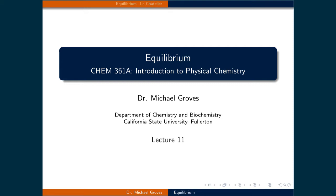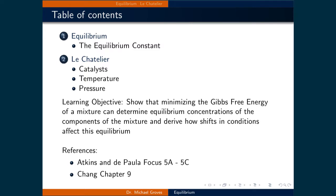Welcome to lecture 11. In this lecture we will show that minimizing the Gibbs free energy of a mixture undergoing a chemical reaction can determine equilibrium concentrations of the components, and derive how shifts in conditions affect this equilibrium. This lecture will be broken down into two parts: in the first part we will define the equilibrium constant K from first principles, and in the second part we will examine how K, and by extension the equilibrium concentrations, change when the conditions are modified.